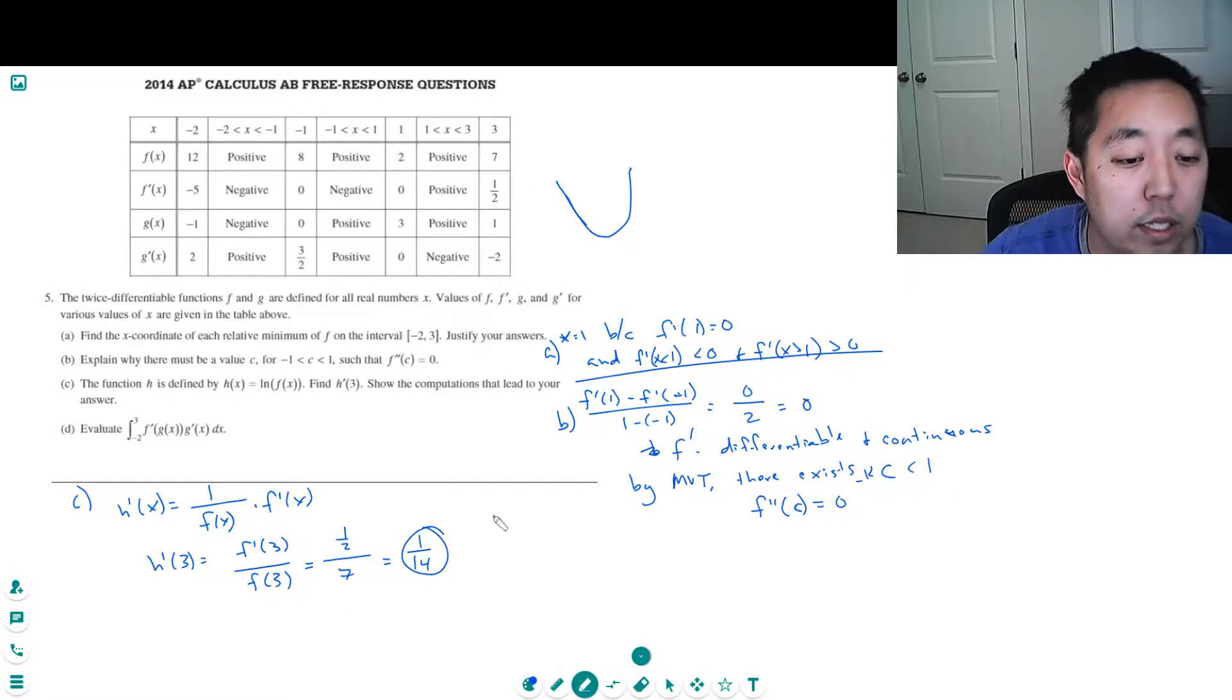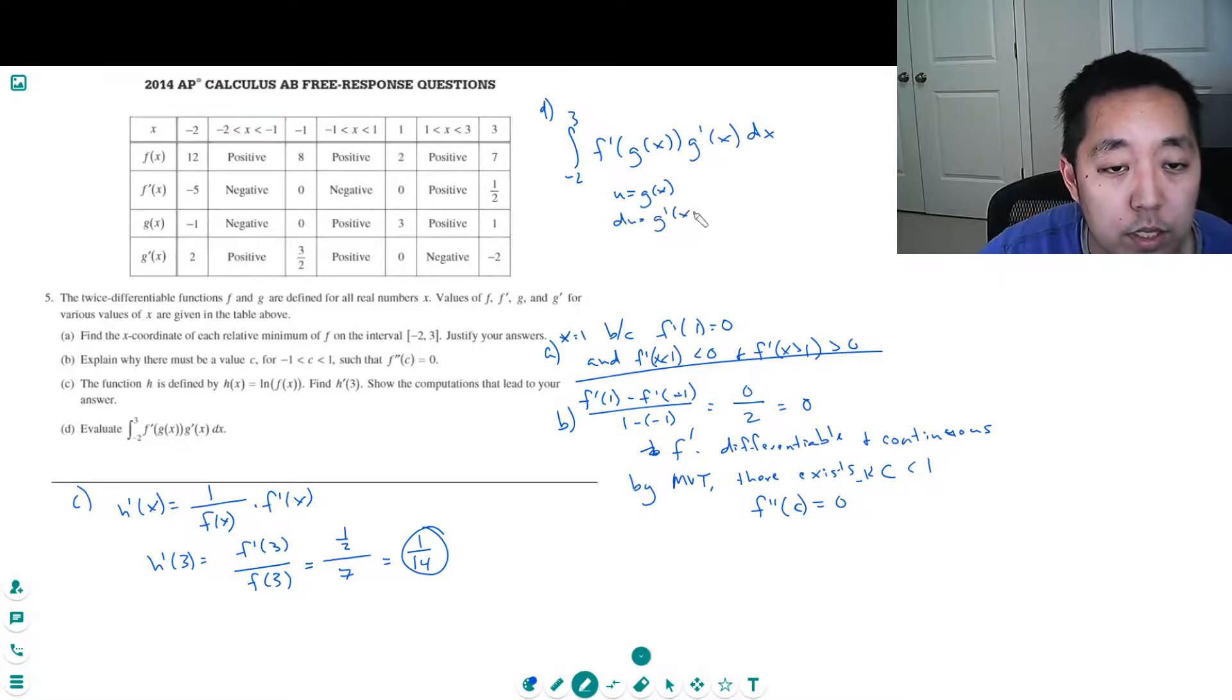Okay, and let's do part D. Evaluate the integral from negative 2 to 3 of f prime of g of x times g prime of x dx. I'm going to do u substitution. If u equals g of x, then du equals g prime of x dx.